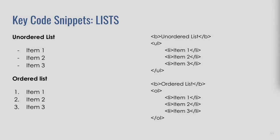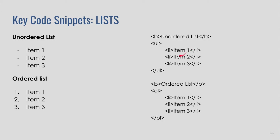We also have different types of lists. If you're making a list of three things in no particular order, that's called an unordered list. The code uses bold to make text bold, UL to start an unordered list, and LI to indicate each list item, which then closes. That's the end of the unordered list.